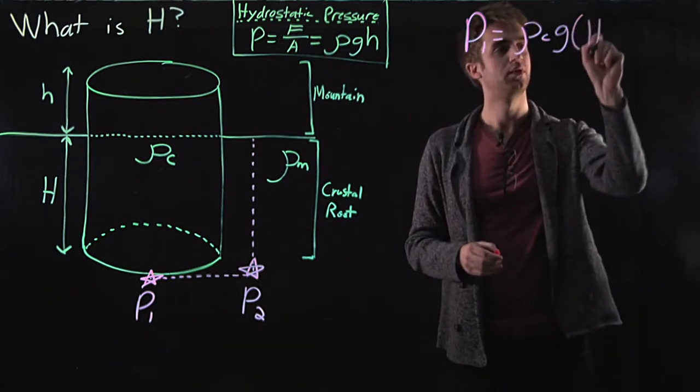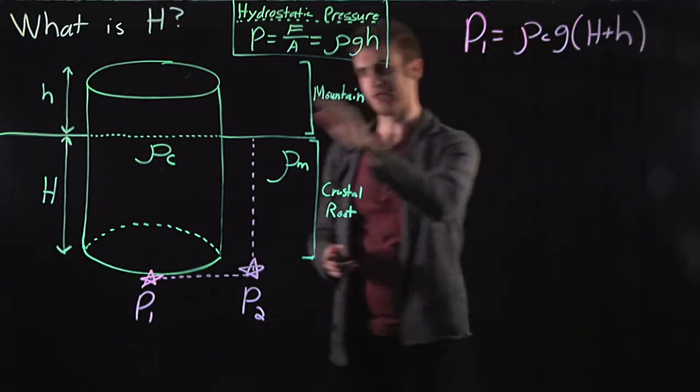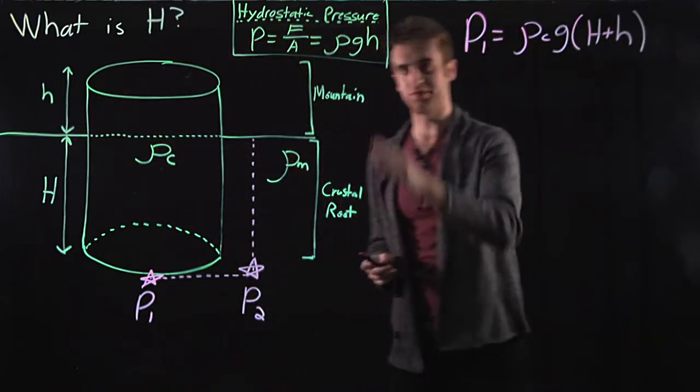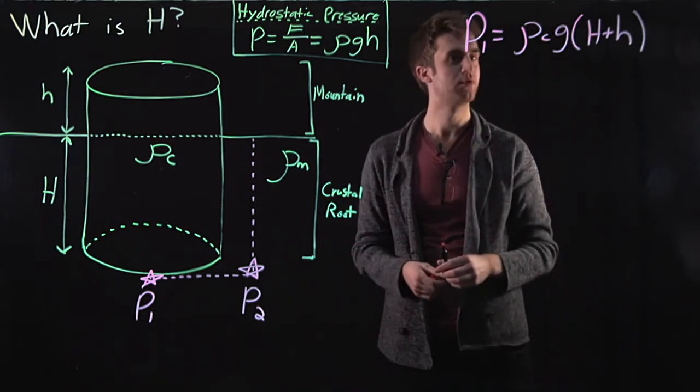is just the sum of big H and little h. So this is just H plus h. And let's not confuse this little h with this little h here. This is just a generic depth. Great.